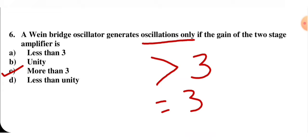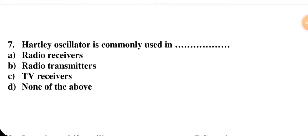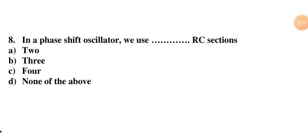Next question: the Hartley oscillator is commonly used in — radio receiver, radio transmitter, TV receivers, or none of the above? The Hartley oscillator is used as a local oscillator in a radio receiver. So option A is correct. In a phase shift oscillator, we use how many RC sections — two, three, four, or none of the above? We use three RC sections, so option B is correct.